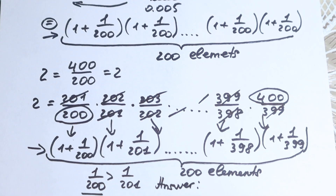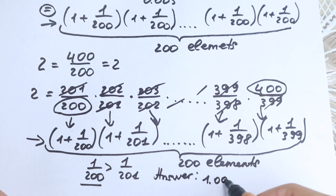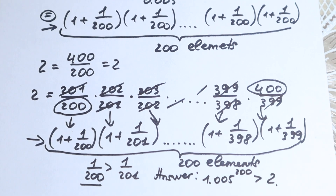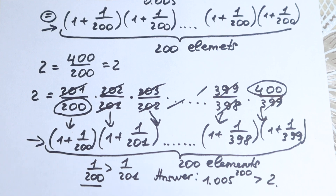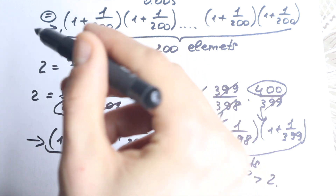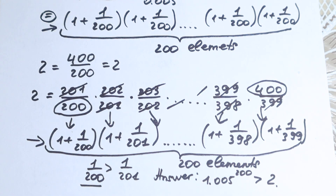So our final answer: 1.005 to the power 200 is greater than 2. I found this solution in my math book and wanted to share it. Don't feel bad if you got this wrong — maybe you have your own solution using limits or another formula. It would be really interesting to read your thoughts in the comments. Thank you for your time, have a great day, see you in the next videos and take care of yourself.